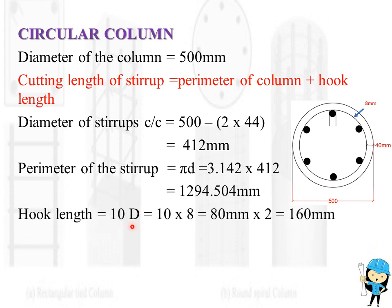Hook length is equal to 10D, as in case of rectangular column, that is equal to 80 mm x 2, which will be 160 mm.